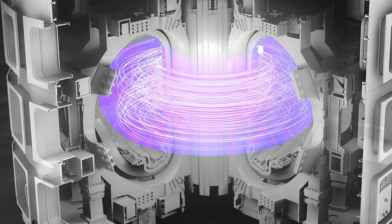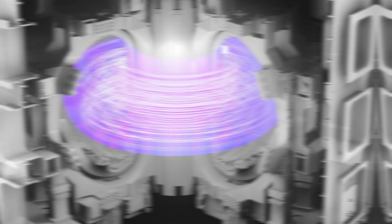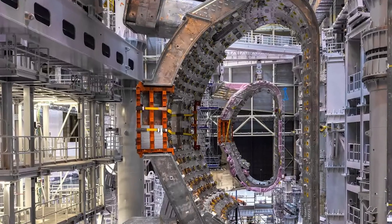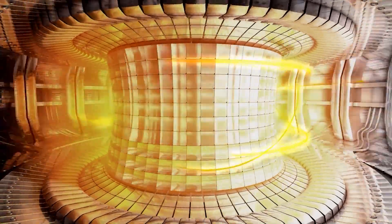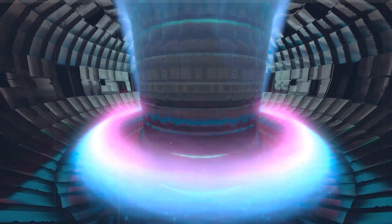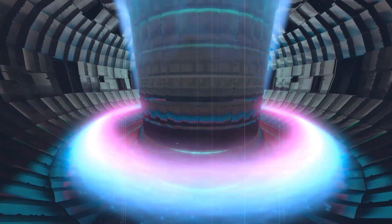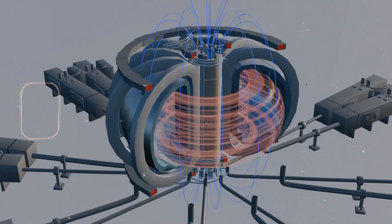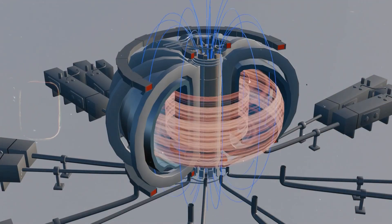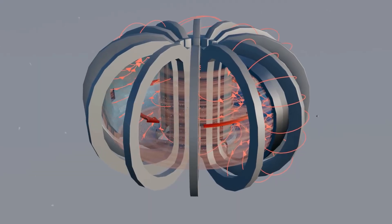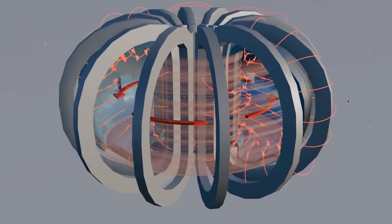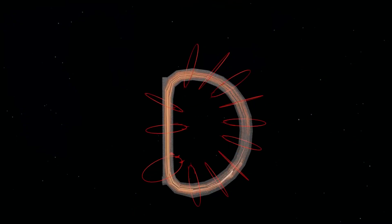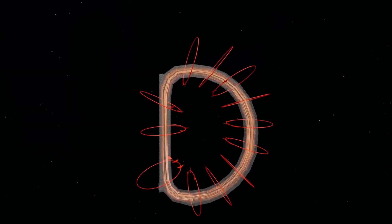This is where the latest advancements in superconducting magnets come into play. Superconducting magnets are made from materials that have zero electrical resistance, allowing them to carry much more current without generating heat. This makes them ideal for fusion reactors, as they can generate stronger magnetic fields without the massive energy losses associated with traditional copper magnets. Commonwealth Fusion Systems, a company founded in 2018, is using superconducting magnets to create a fusion reactor that could change the world. Their magnets are the strongest in the world for their size and could make fusion power plants smaller, cheaper, and faster to build.